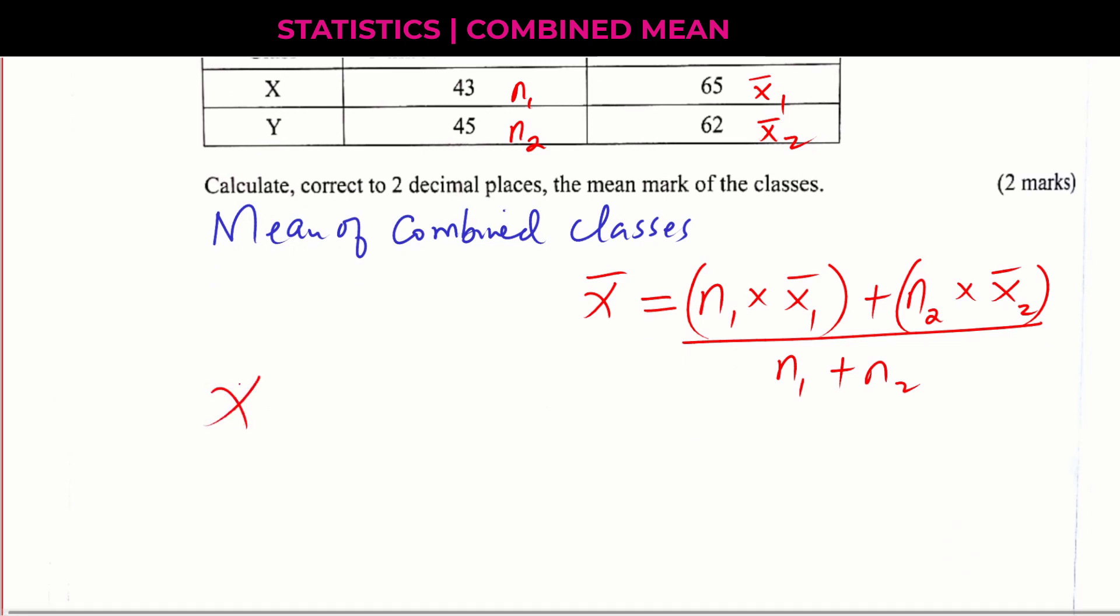So the combined mean will be N1, which is 43 times 65, that is X bar 1, plus N2, which is 45, times X bar 2, which is 62, divided by N1 plus N2, which is 43 plus 45.